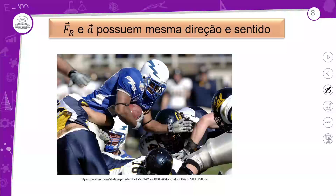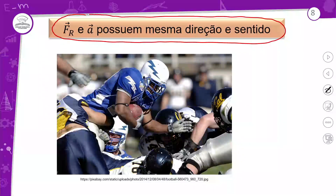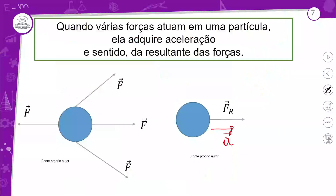Força resultante e aceleração possuem a mesma direção e sentido. Isso indica que a variação de velocidade — ou seja, o movimento uniformemente variado — produz uma aceleração no mesmo sentido da força resultante. Como vimos no exemplo anterior, se você tem um corpo e aplica várias forças, a força resultante é justamente a soma de todas essas forças.